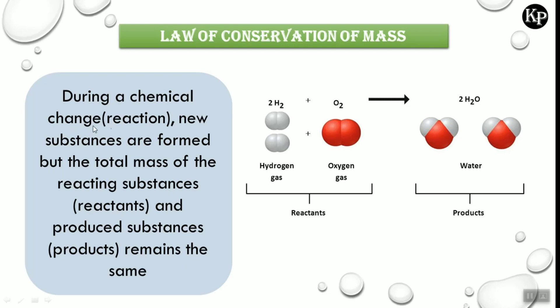During the chemical change, that is a chemical reaction, new substances are formed, but the total mass of the reacting substances — that is the reactants — and the produced substances — that is the products — remain the same.